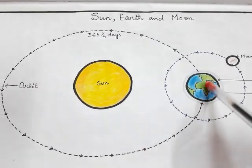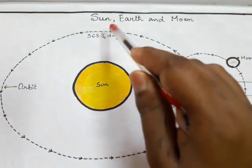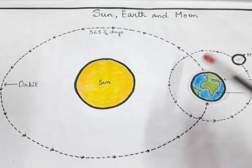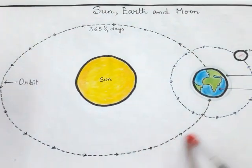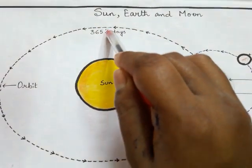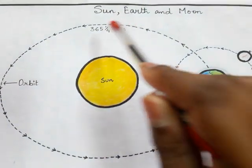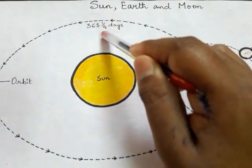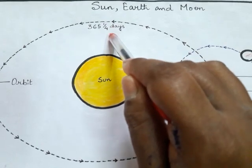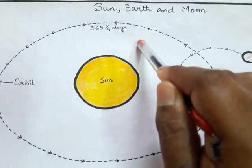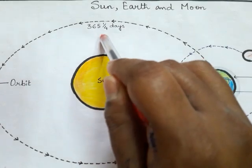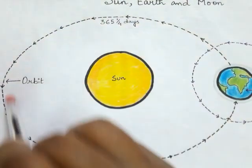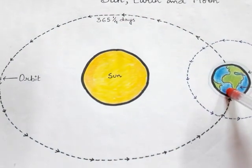The Earth takes 365 one-fourth days to complete one revolution around the Sun. That is 365 days plus six hours, because one-fourth of 24 hours equals six hours.